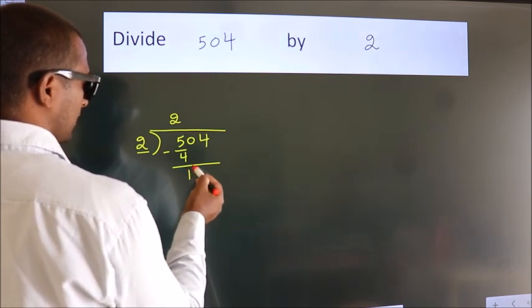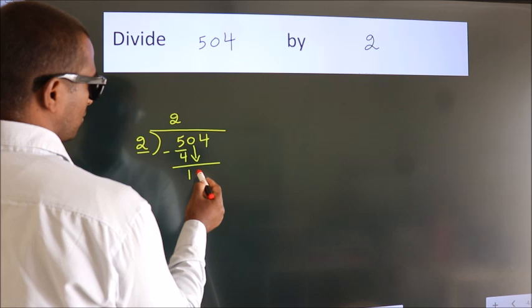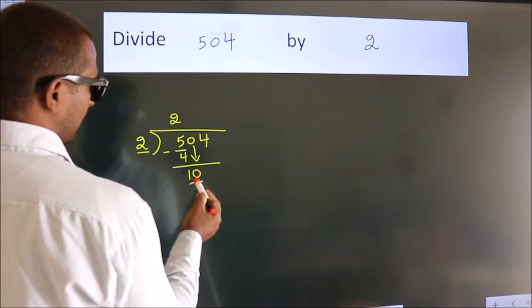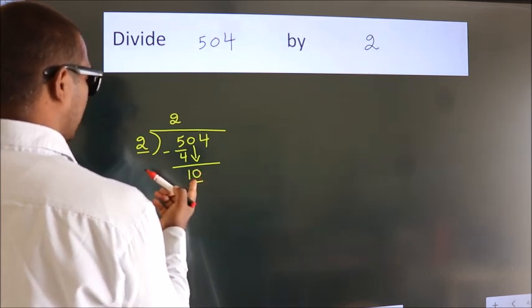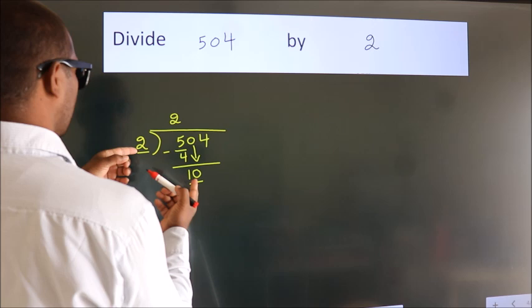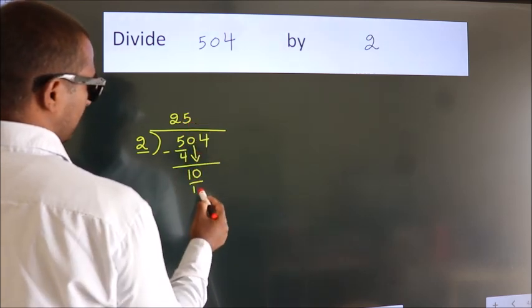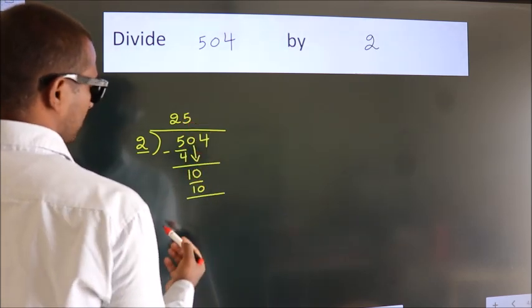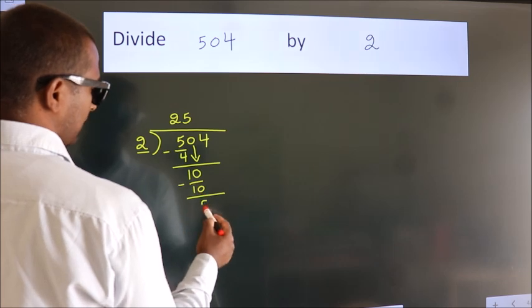After this, bring down the beside number. So, 0 down. That's 10. When do we get 10? In 2 table. 2 5s, 10. Now we subtract. We get 0.